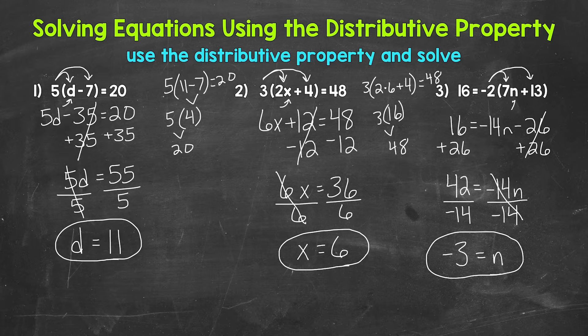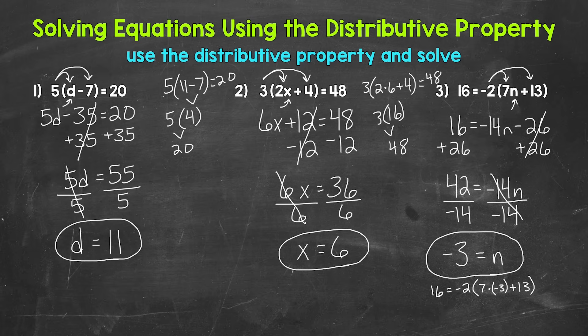Let's check that by plugging in negative 3 for n. We have 16 equals negative 2 times (7 times negative 3 plus 13). In parentheses, 7 times negative 3 is negative 21, plus 13 gives us negative 8. Then negative 2 times negative 8 — a negative times a negative is a positive — equals 16. So we are correct. n equals negative 3.